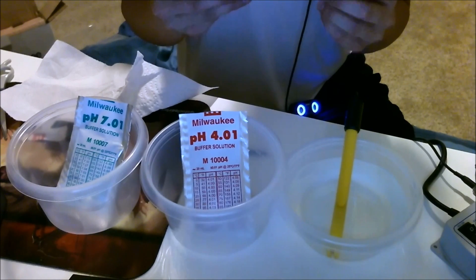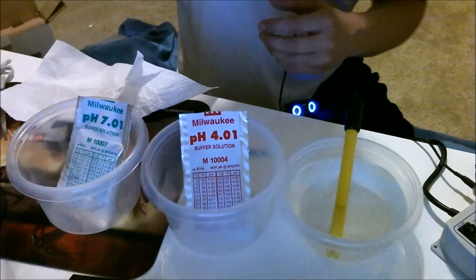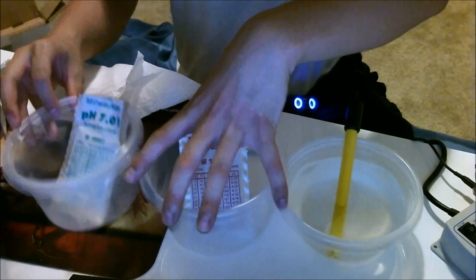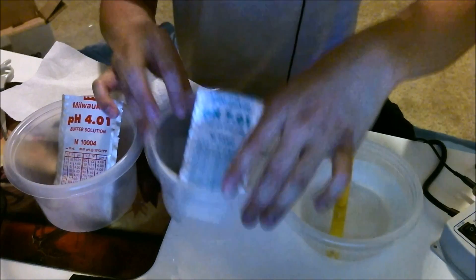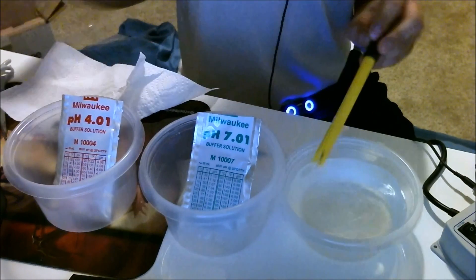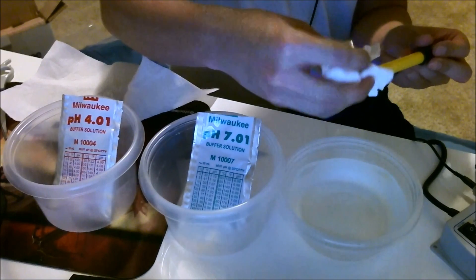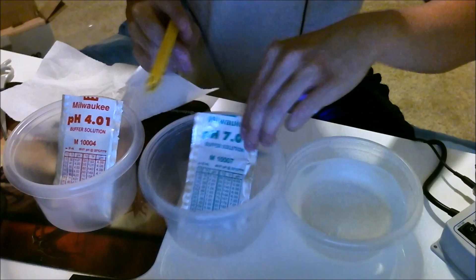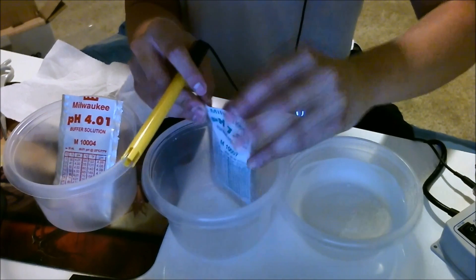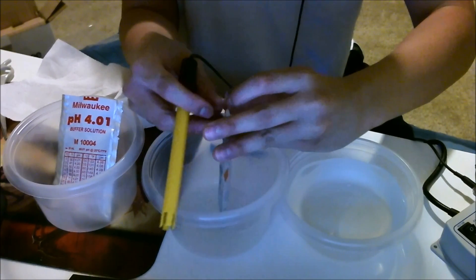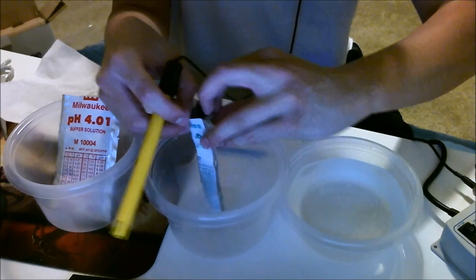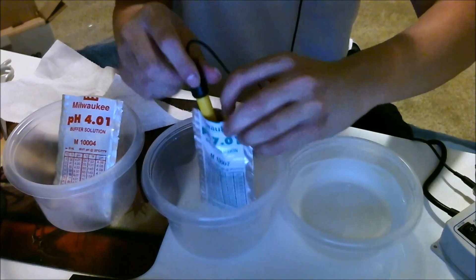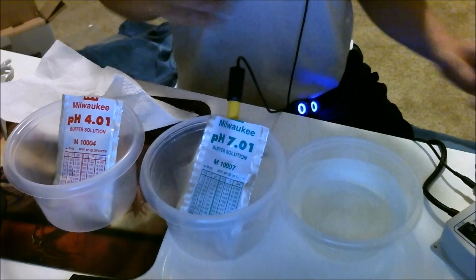The instructions say to start with the 7.0 pH first. We'll swap this and rinse this off. We'll plug this into the 7.0 solution.